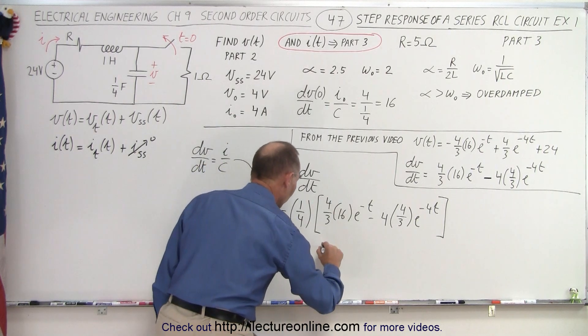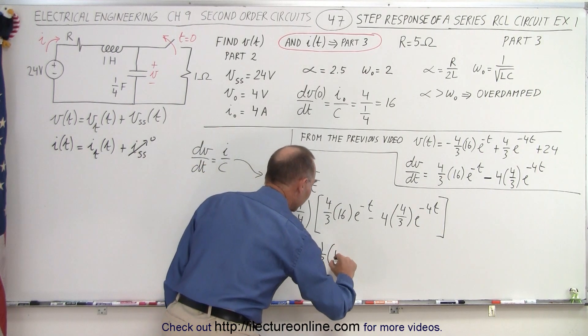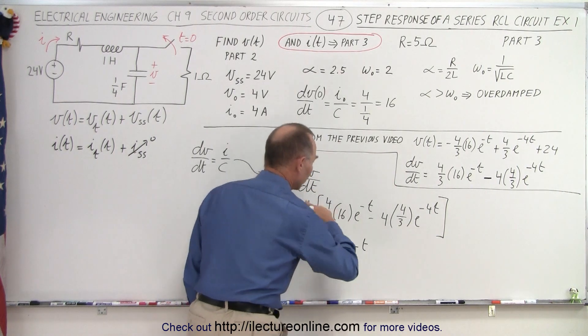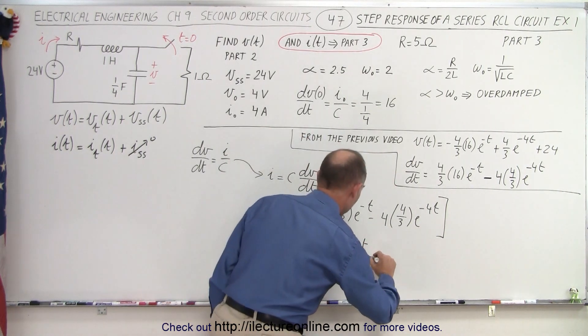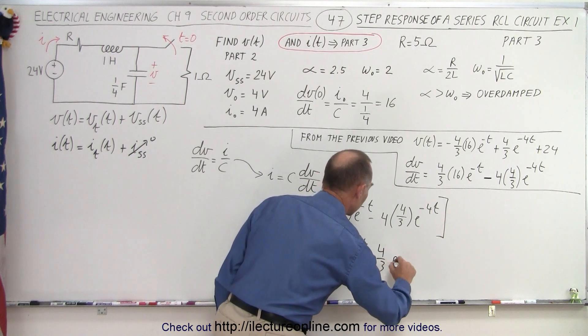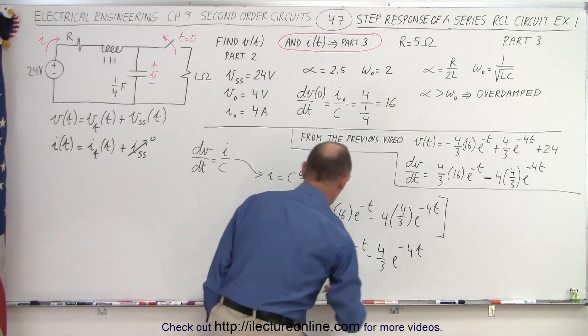This is equal to one-third times 16 e to the minus t. The fourths cancel out, so that's minus four-thirds e to the minus 4t. And of course, that will be the current as a function of time through the capacitor.